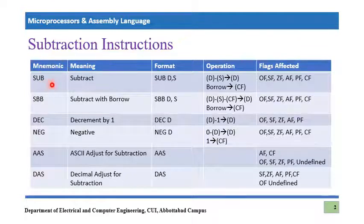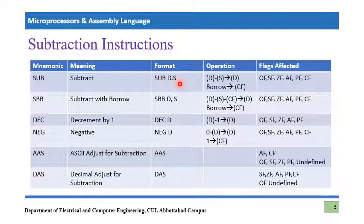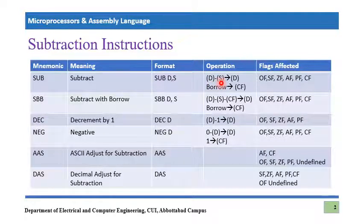The very first instruction is SUB, which means subtract. The format is similar to the ADD command: SUB D, S. What is going to happen in subtraction is that you subtract the source value from the destination value, and the result is also transferred to the destination. One thing which is important to be careful about is that after execution of this instruction, the content of the destination operand will be modified, so we need to save it somewhere before this operation if it is important.